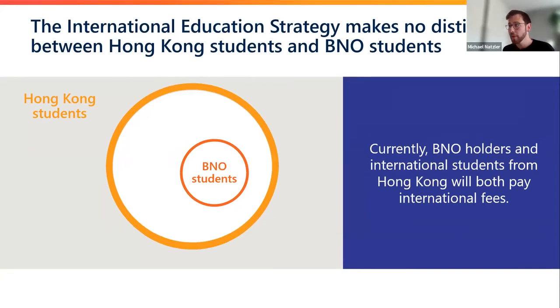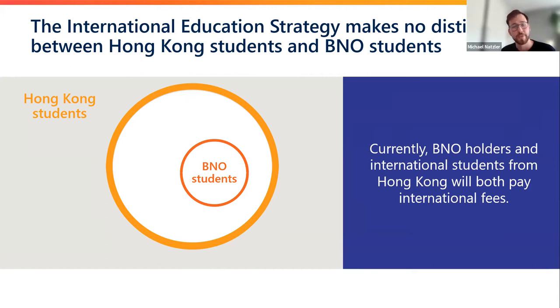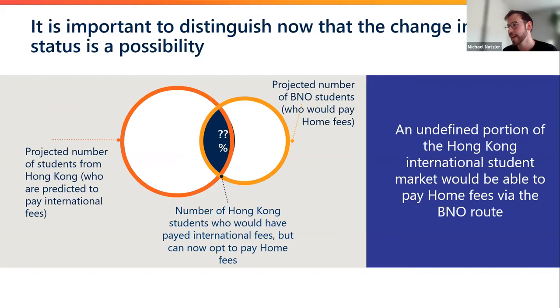At the moment there is no distinction or mention of BNO holders in the international education strategy, so BNO holders are currently being treated as part of the general Hong Kong population in projections of future international student numbers. I want to share a slide which I think captures a point best made visually. At the moment the international education strategy looks at Hong Kong students and BNO holders in the same light — there's no difference in international fees — but now that the question of a fee status change has been posed, universities need to look at it differently.